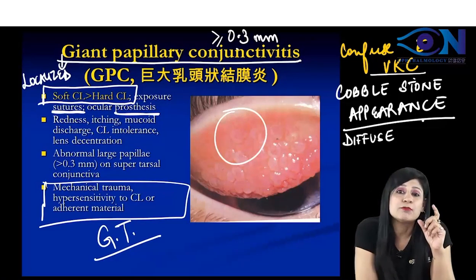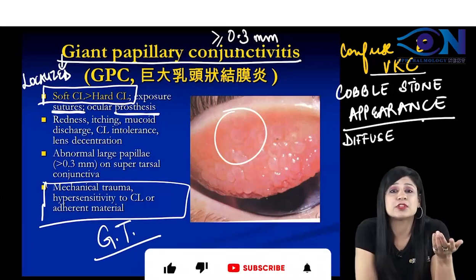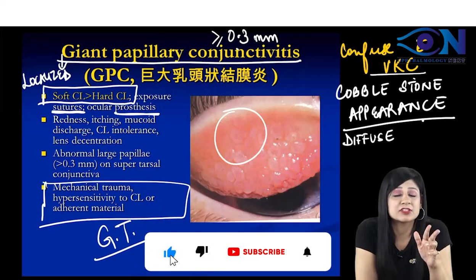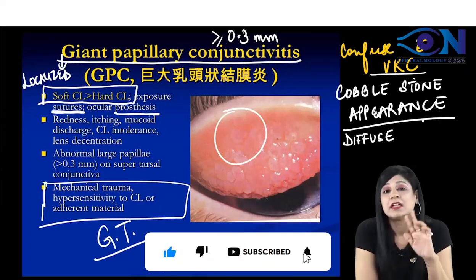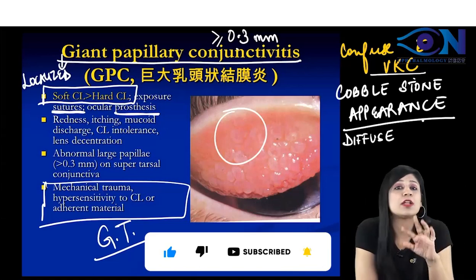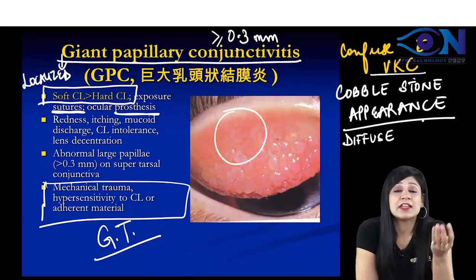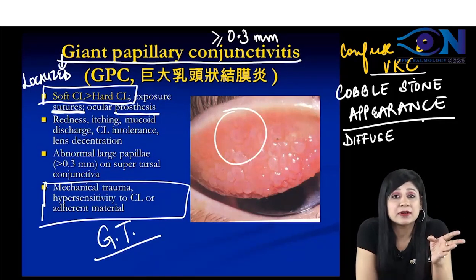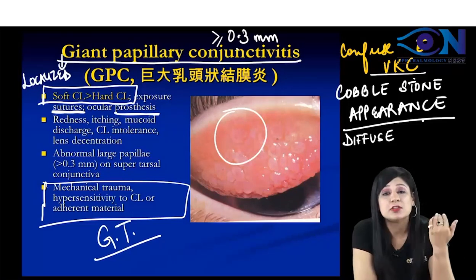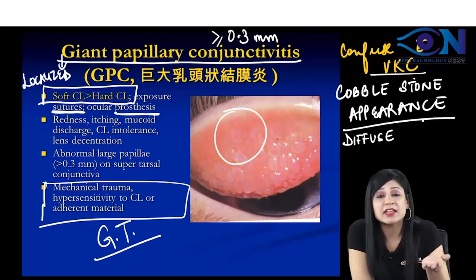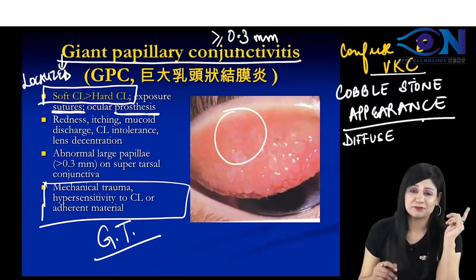Even if you are confused on the image, you can distinguish GPC from VKC using several features: VKC occurs in hot and humid climates, and you get ropy discharge along with other signs. Do not get confused between the two.